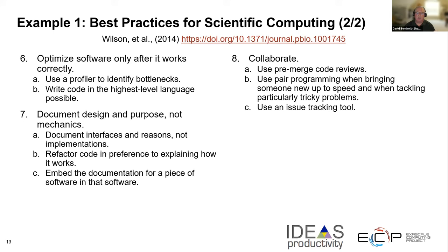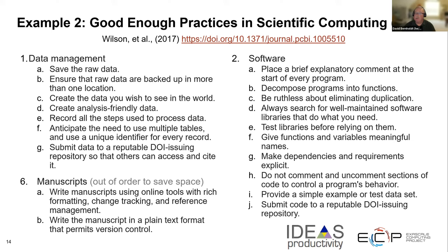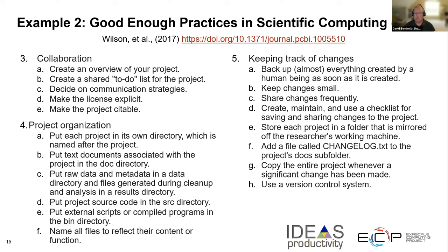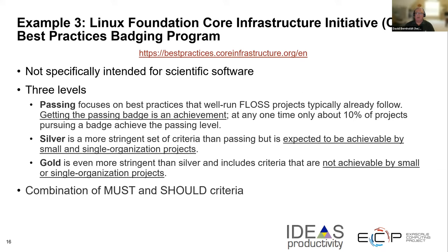They also talk about documenting design and purpose rather than mechanics, and about collaboration around the software. There's a follow-up paper called 'Good Enough Practices in Scientific Computing,' because their experience was that the best practices could sometimes be hard to follow. It advises practices around data management, the software itself, writing manuscripts, collaborating with colleagues, organizing a project, and keeping track of changes. Another example is the Linux Foundation's Core Infrastructure Initiative, which has a best practices badging program — not specifically for scientific software, but a useful set of principles.